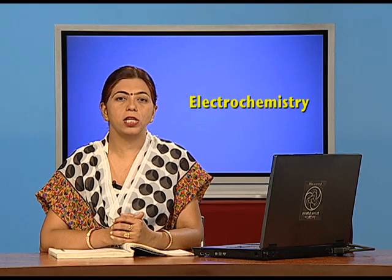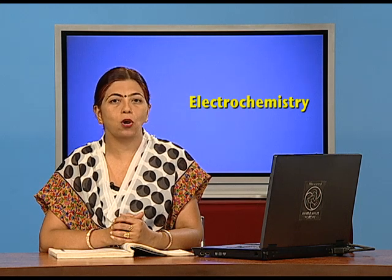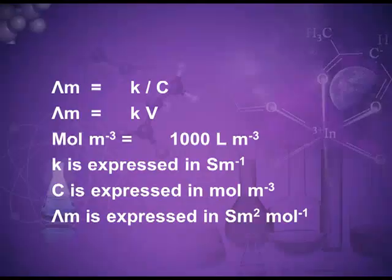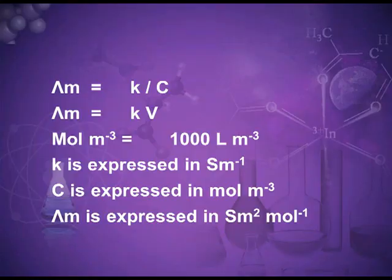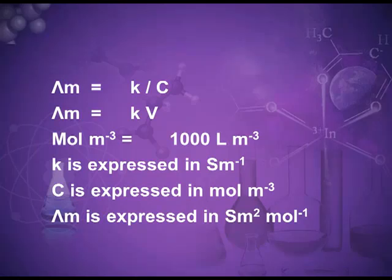The symbol for molar conductivity is lambda with subscript small m. Mathematically, lambda m, or the molar conductance, is related to kappa (conductivity) by: lambda m equals kappa upon C, where C is the concentration expressed in moles per liter. Lambda m is also equals to the product of conductivity and volume. The unit of molar conductance, obtained by substituting the units of kappa and volume or concentration, is Siemens meter squared per mole.